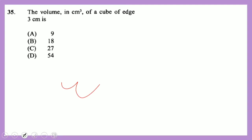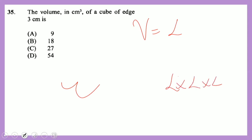Question 35: the volume of a cube with an edge of 3 centimeters. The volume formula is length × length × length, which is length cubed. So 3 cubed equals 27 cubic centimeters.